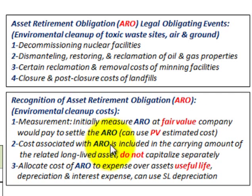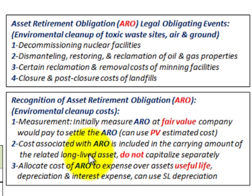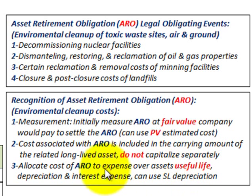The cost associated with the ARO is included in the carrying amount of the related long-term asset. You do not capitalize it separately — you just include it in the carrying amount of your long-term asset. Number three: you allocate the cost of the ARO to expense over the asset's useful life, which would be depreciation and interest expense. You can use the straight-line depreciation method.